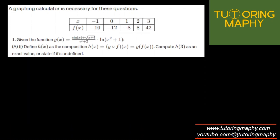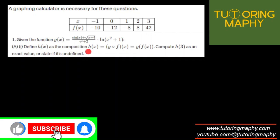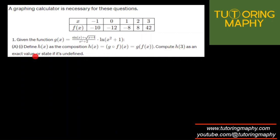Keep your TI-84 handy because we're going to use it aggressively here. Given the function — there's a table with values of x and f(x). There's another function g(x) which is not so pleasant — it has a natural log as well. We define h(x) as the composite function g of f(x), and we have to compute h(3) as an exact value, or state if it's undefined.